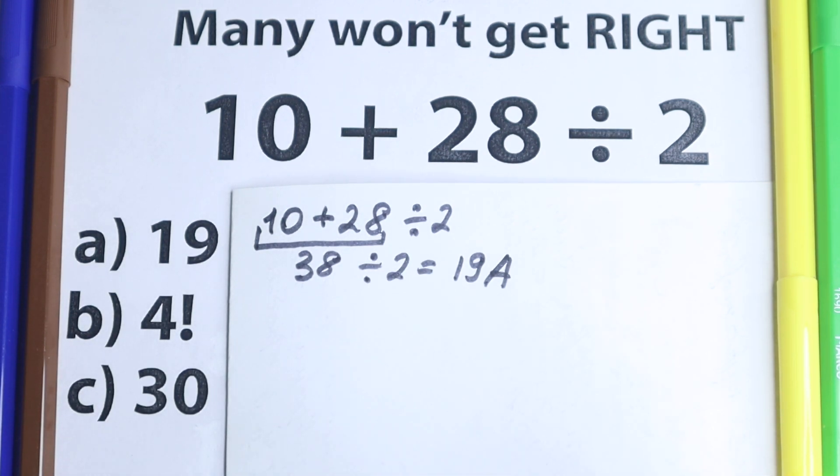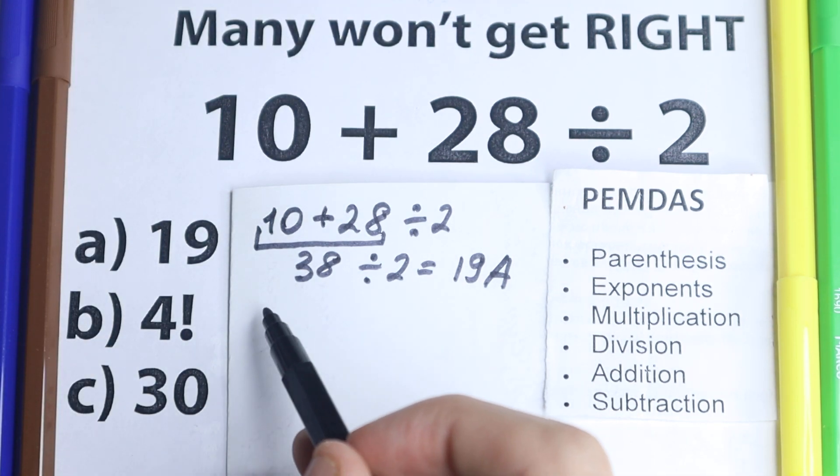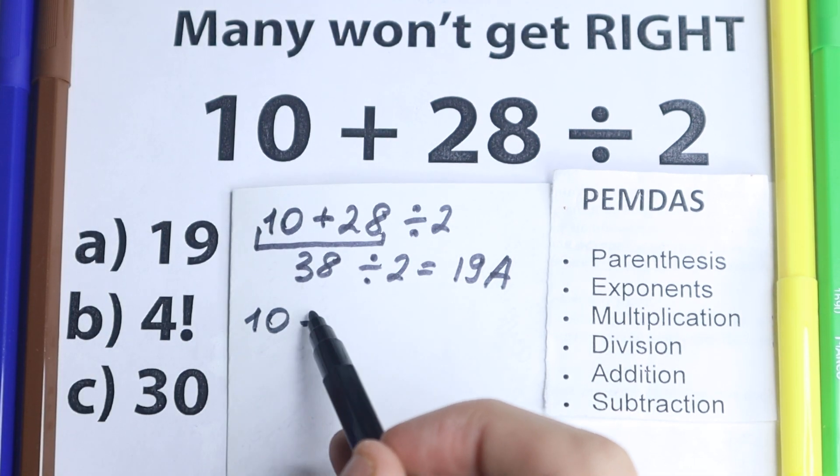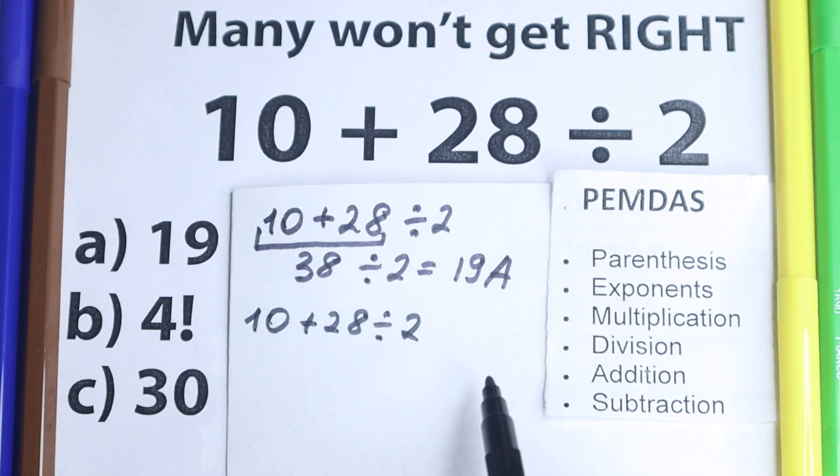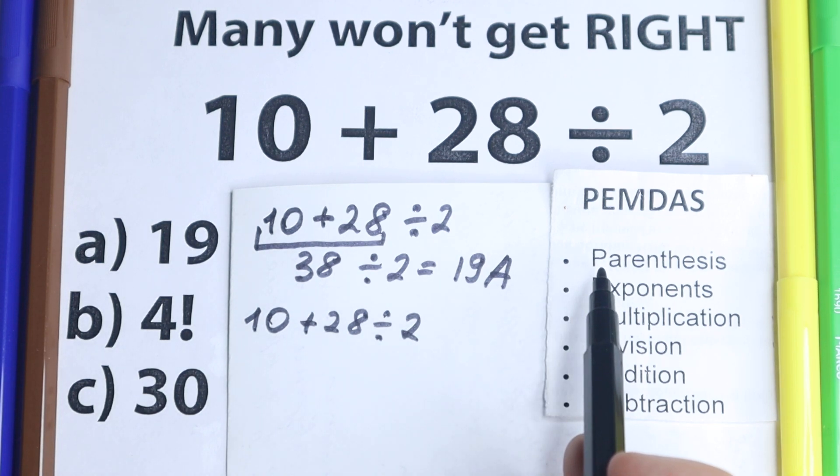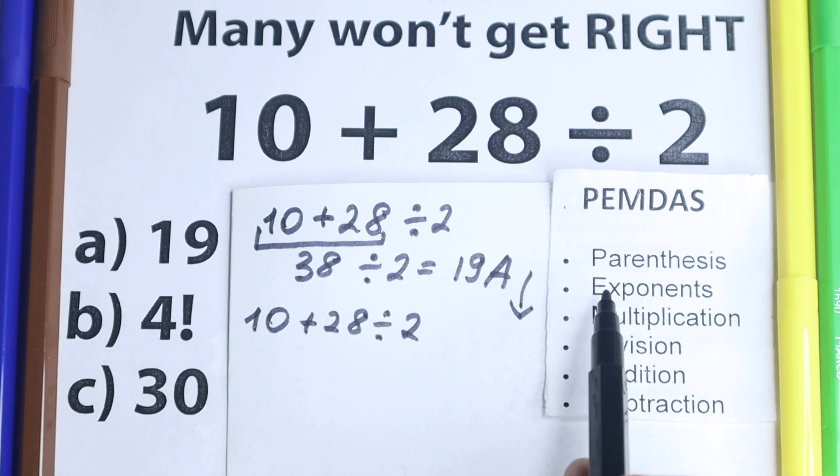But before solving this I'm going to show this PEMDAS order of operation. And let's look at this order of operations real quick. I want to read this question: 10 plus 28 divided by 2. Let's solve it according to PEMDAS. Because if you look at the PEMDAS, what is the first step according to PEMDAS? This is the order of operation, of course.